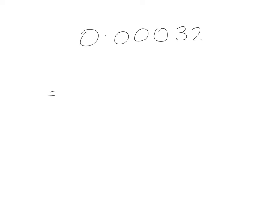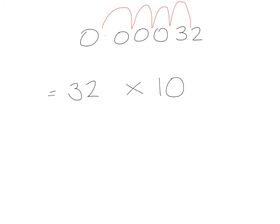The first few examples we looked at had really big numbers. Now we're going to look at examples where the numbers are really small. We still follow the same process — write down all the digits from the first non-zero digit up to and including the last one. So I write down 3, 2 — times 10 to the power of something. I count how many spaces my decimal point has to move: 1, 2, 3, 4. But because this is a small number and I've had to count to the right, it's going to be times 10 to the power of negative 4. Also, I need to put a decimal point in between the first and second non-zero numbers.